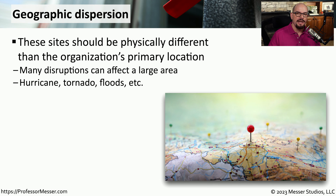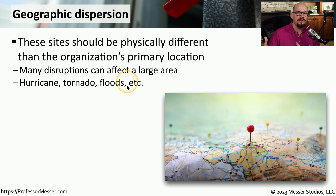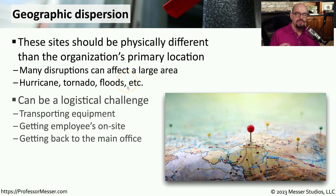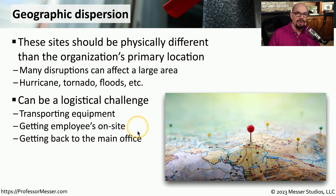For most organizations, their recovery site is going to be at a location that is a significant distance away. This geographical dispersion means that if something physical happens to your primary location, it's very likely your recovery site will not be affected. For example, if there is a storm affecting a very large area, such as a hurricane or a flood, that would certainly affect a recovery site located down the street from your main location. But if your recovery site was in a different state, it's very unlikely that the same storm would be affecting both locations at the same time. As you can imagine, it becomes more challenging to have a recovery site that is farther away — we have to think about how we'll get equipment there, have employees on site, and consider transport, especially if there's been a natural disaster. And eventually, all of that needs to come back to the main site if this is only used temporarily.